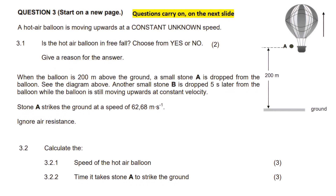We have a hot air balloon that is moving upwards at a constant unknown speed. It's moving at a constant speed, so that means its acceleration is zero — that's for the hot air balloon. Then it says: is the hot air balloon in free fall? Choose yes or no, and give a reason for the answer.